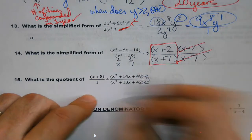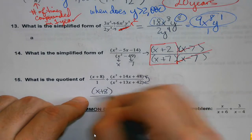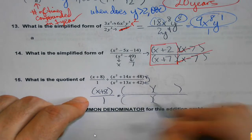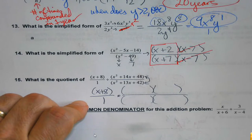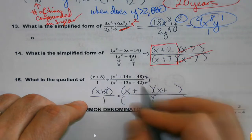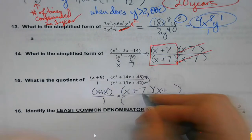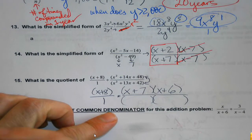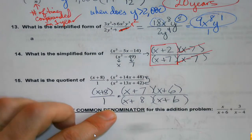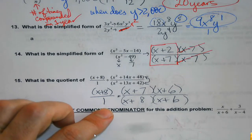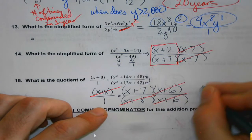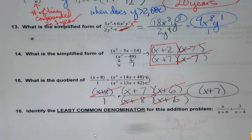For the quotient problem, that second fraction has to flip — the first fraction we leave alone. I'll do diamond factoring on both: multiplies to 42 and adds to 13 gives 7 and 6; multiplies to 48 and adds to 14 gives 8 and 6. Now I look for identical sets of parentheses to cancel, and whatever doesn't cancel is my answer.